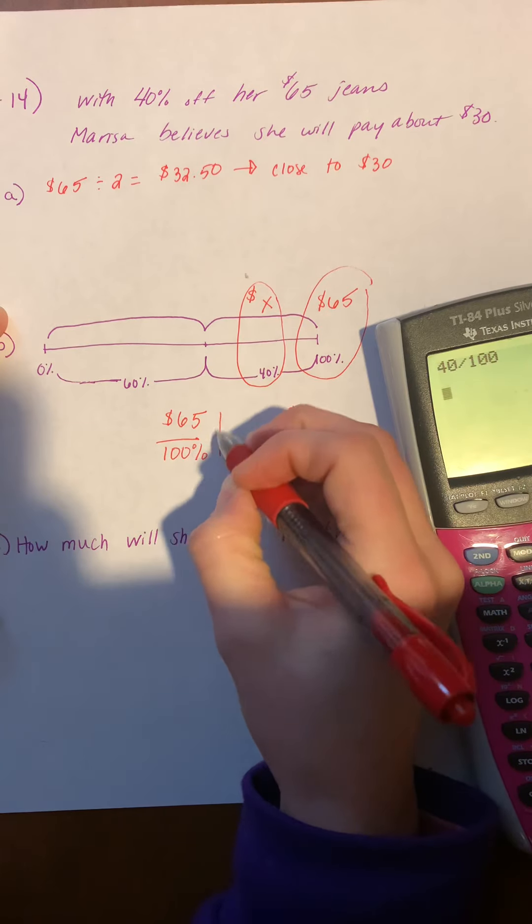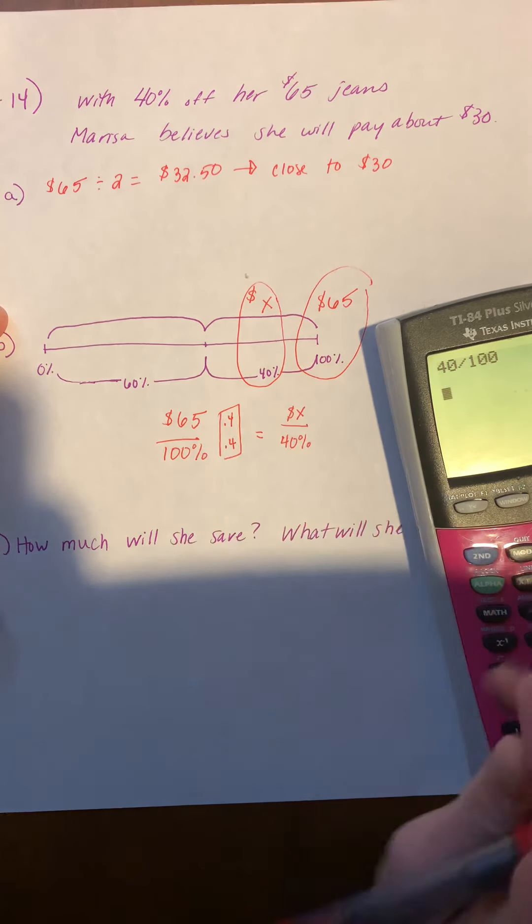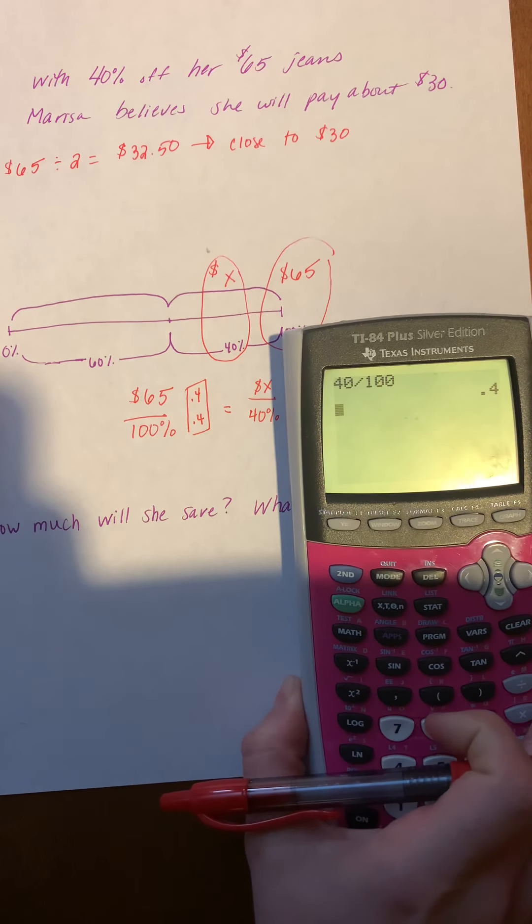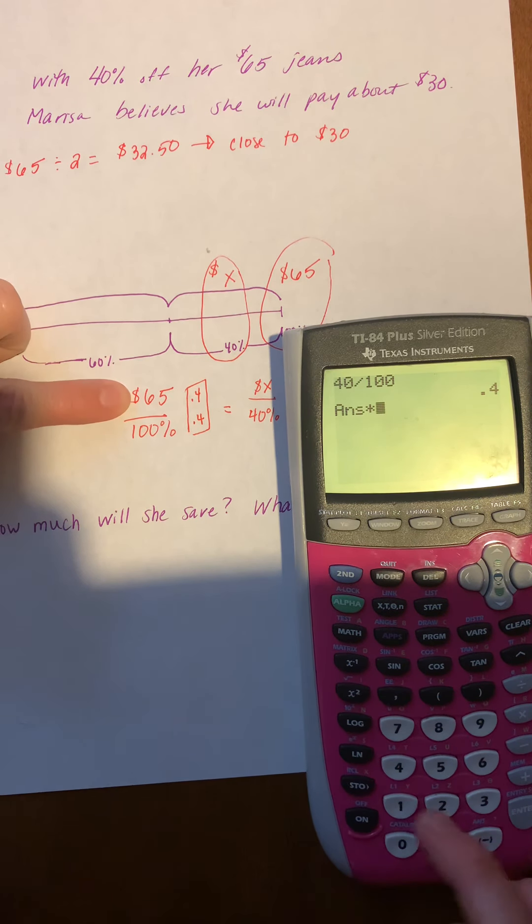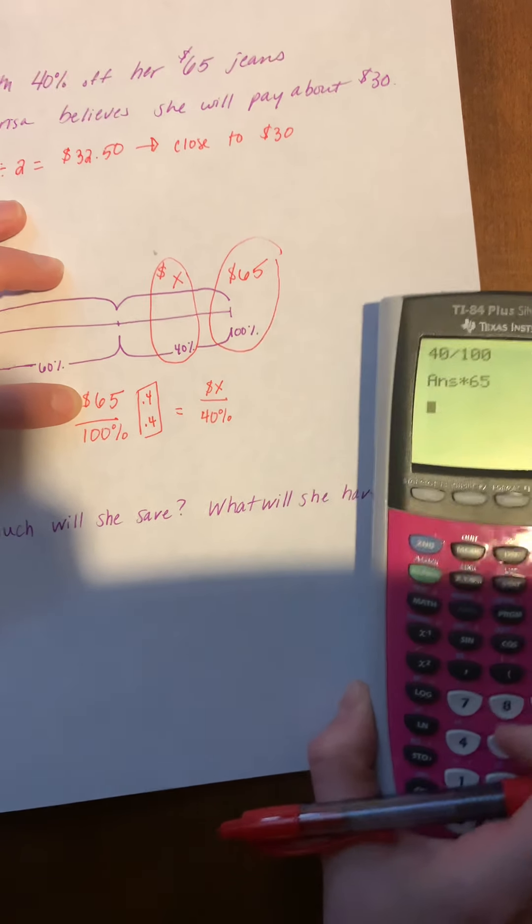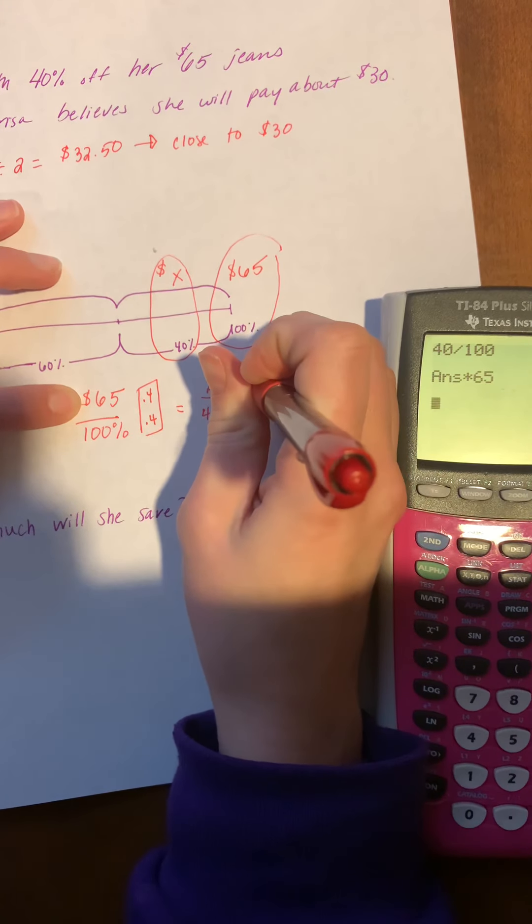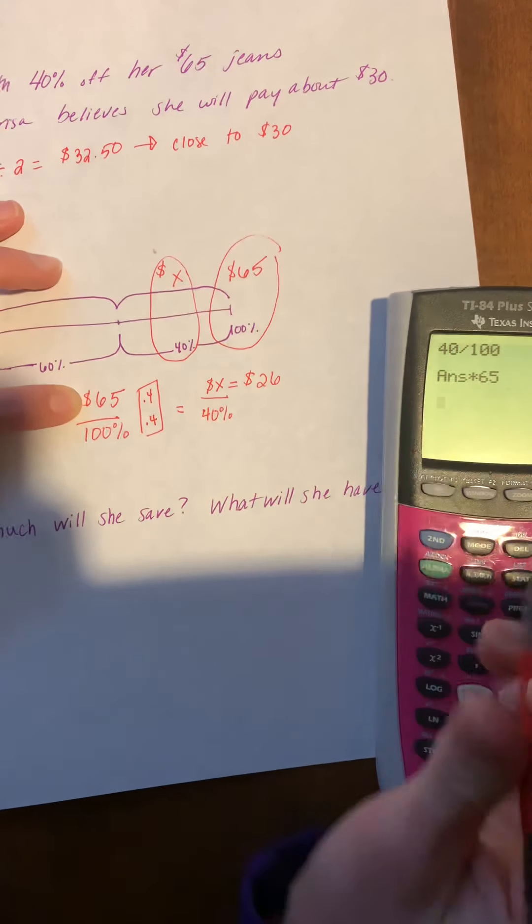0.4. So with my giant 1, 0.4. And since this is already typed into my calculator, I'm just going to hit times. And then what I have in my numerator is 65. So multiplying straight across, I get that X is equal to $26.